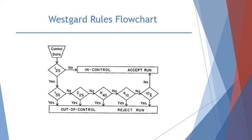The Westgard rules flowchart helps you determine whether your QC is in or out and whether to accept or reject the run. You start with your control data. If there is no 1-2S warning rule violation, your QC is in control and you can accept the run. If you do have the 1-2S warning rule, check whether any other rules are violated. If not, you can still accept the run. If other rules are also violated, your QC is considered out of control and you should reject the run.